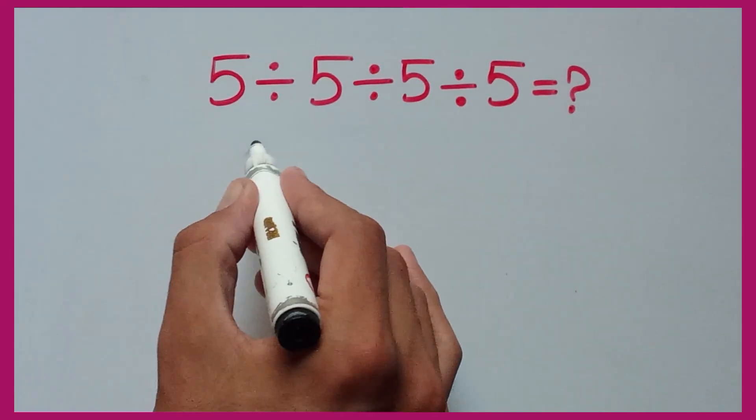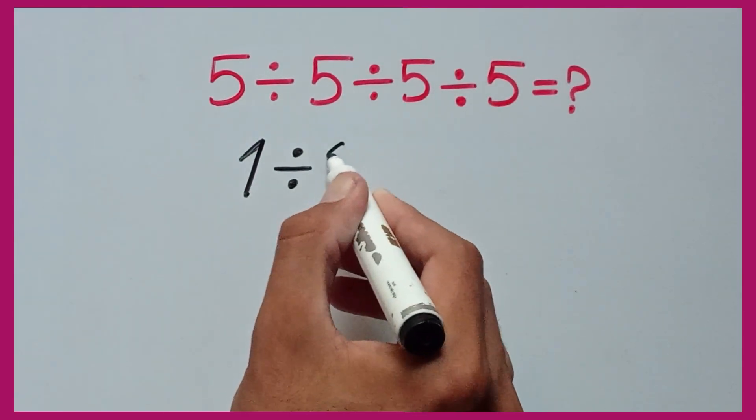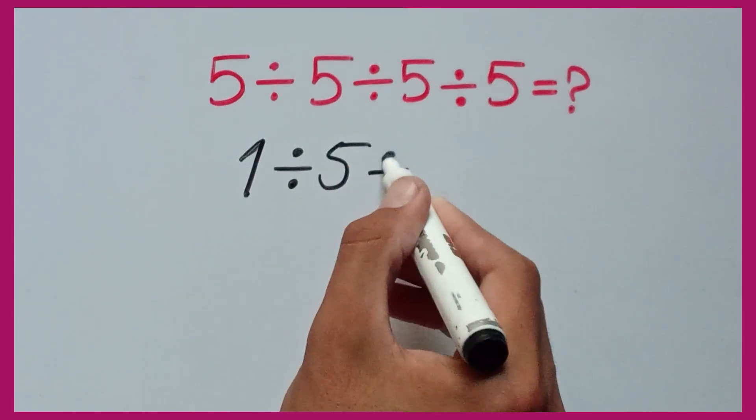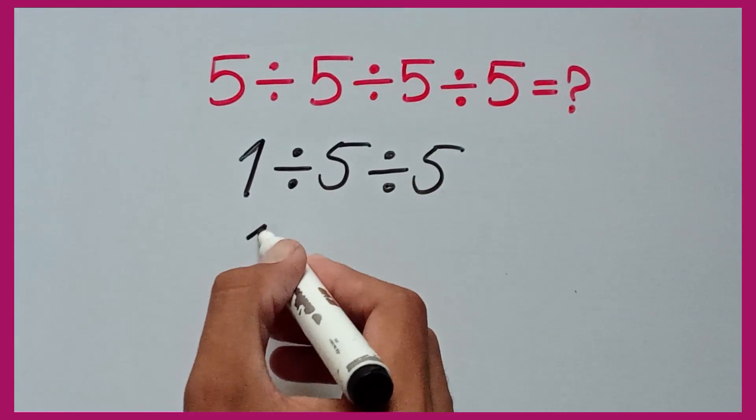So 5 divided by 5 equals 1, divided by 5, divided by 5. 1 divided by 5 I can write as 1 over 5.